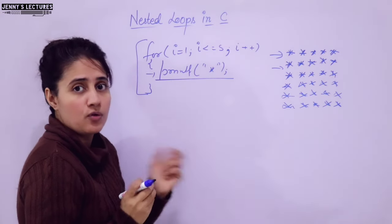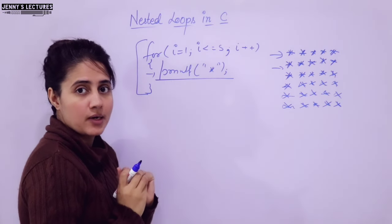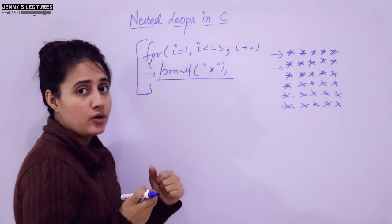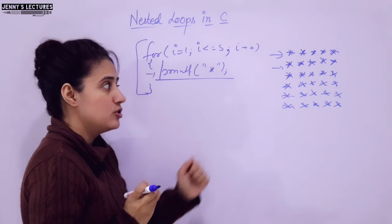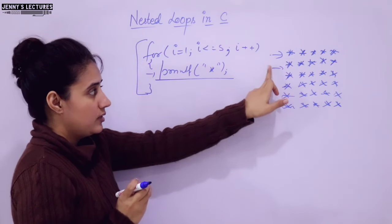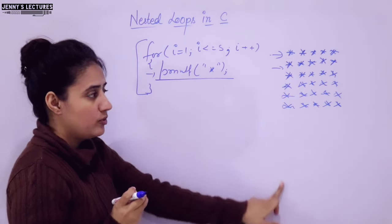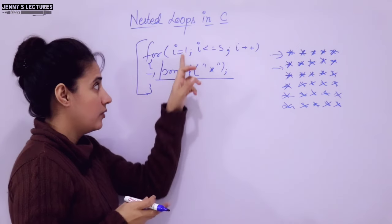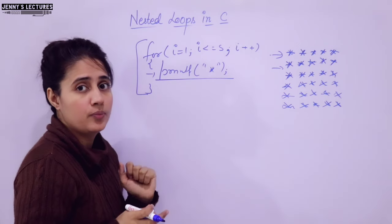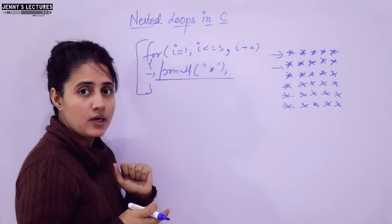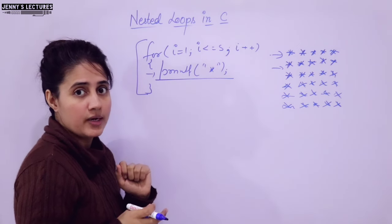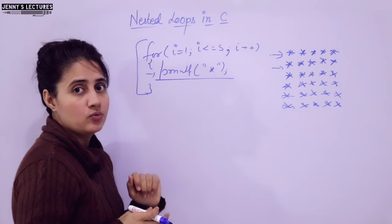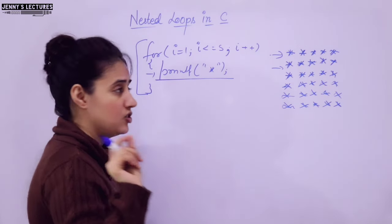Maybe you can write 6 for loops, but that is also not a good practice. Suppose I want the number of lines to be 50 — it's not like you will write 50 for loops here. That is not a good idea.